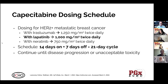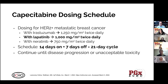The specific capecitabine dosing for our patient is 1,000 milligrams per meter squared twice daily, dosed based on body surface area. The schedule is a 21-day cycle: the patient is on the drug for 14 days, then off for seven days. These drugs target all rapidly dividing cells, not just cancer cells, so the seven-day break allows the patient's bone marrow time to regenerate blood cells. Since this is used in the metastatic setting, patients remain on this drug until disease progression, unacceptable toxicity, or patient decision.